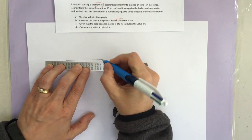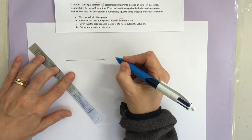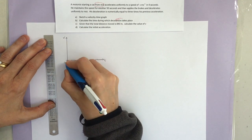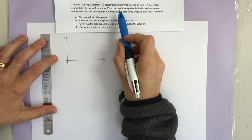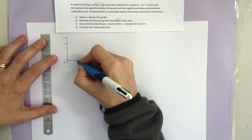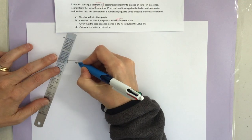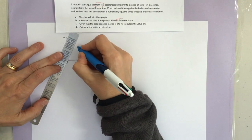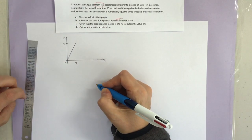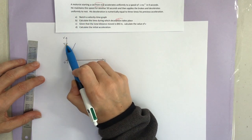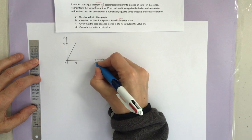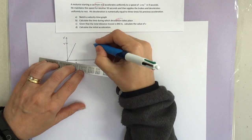As always, time on our horizontal axis, velocity on our vertical axis. We're told initially that it accelerates uniformly to a speed of V in nine seconds, so the first nine seconds we've accelerated up to velocity V — that's our first part of the motion. Then it maintains this speed, velocity V, for 50 seconds. This is not drawn to scale.